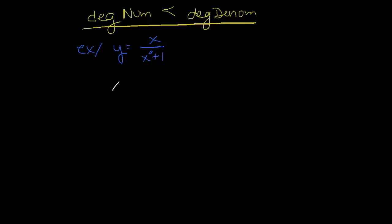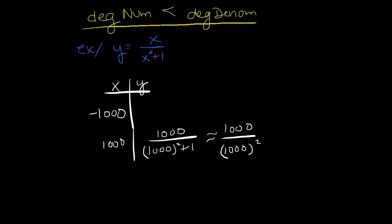If I did the same thing here, and I looked at values like 1,000 and negative 1,000, look what actually happens with the arithmetic. I'd have 1,000 over 1,000 squared plus 1. Well, the plus 1 really isn't going to affect things in the bigger scheme. I'm going to approximate that to be 1,000 over 1,000 squared, because that plus 1 really isn't going to change that value, especially if we plug in 10,000 or a million, huge numbers.